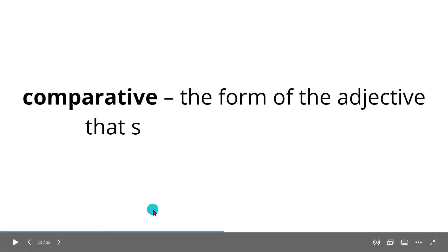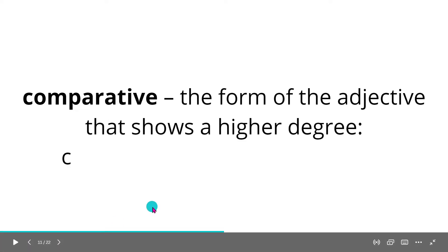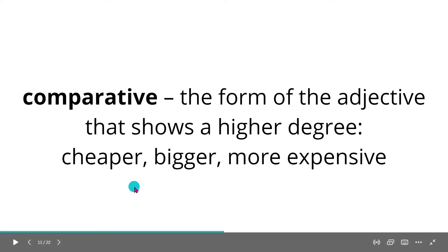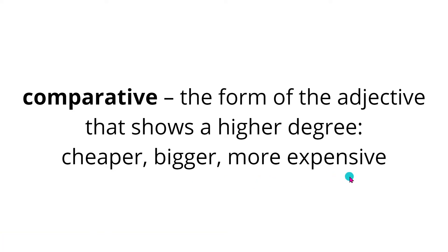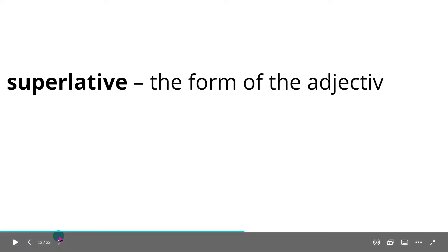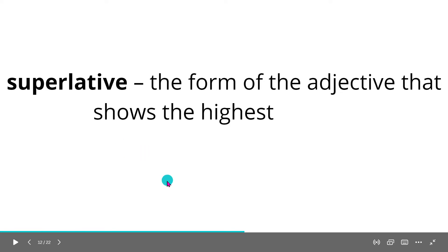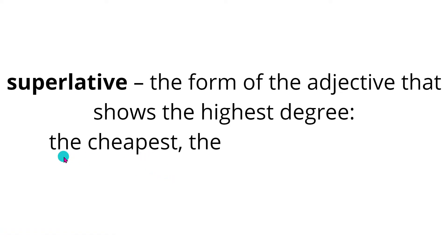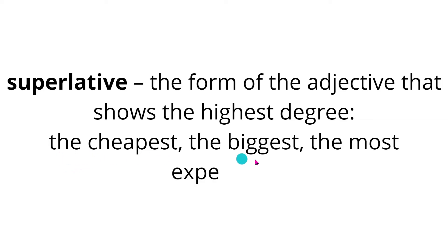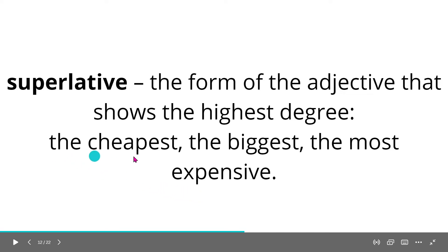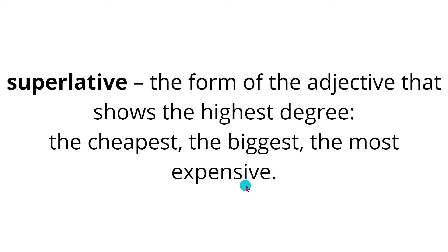Comparative: the form of the adjective that shows a higher degree. Examples: cheaper, bigger, more expensive. Superlative: the form of the adjective that shows the highest degree. Examples: the cheapest, the biggest, the most expensive.